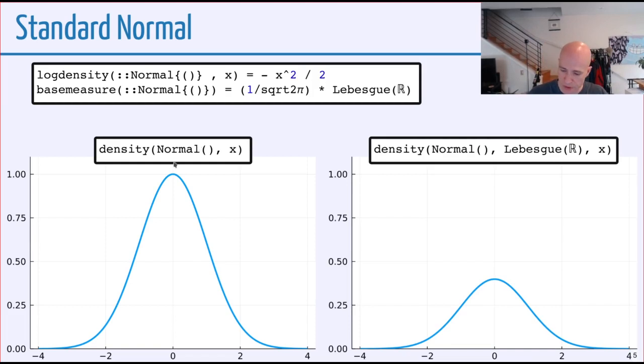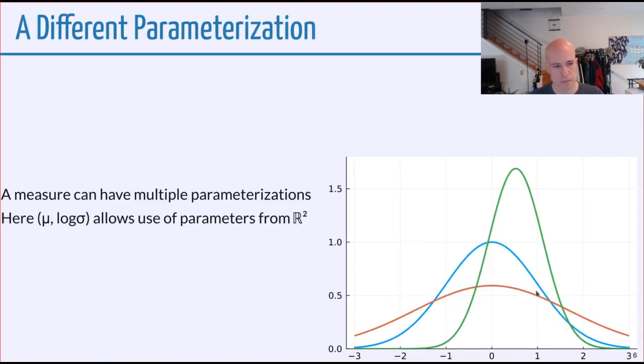We have the two-argument form of density and log density, but we also have a three-argument form that says the density of some measure with respect to some second measure evaluated at some x. The way to read this is the two-argument form by default defines the log density or density with respect to the specified base measure. We have to do some extra steps to get this relative to standard Lebesgue measure.